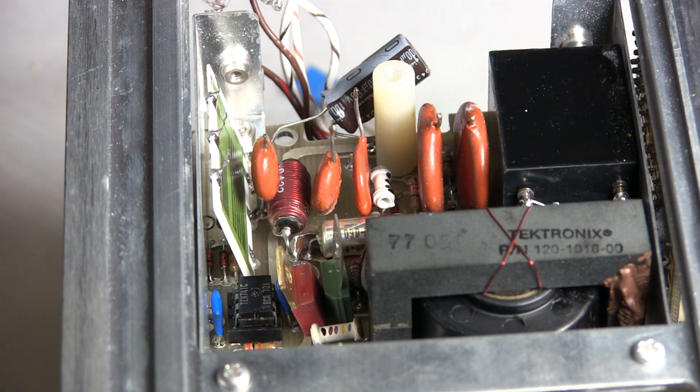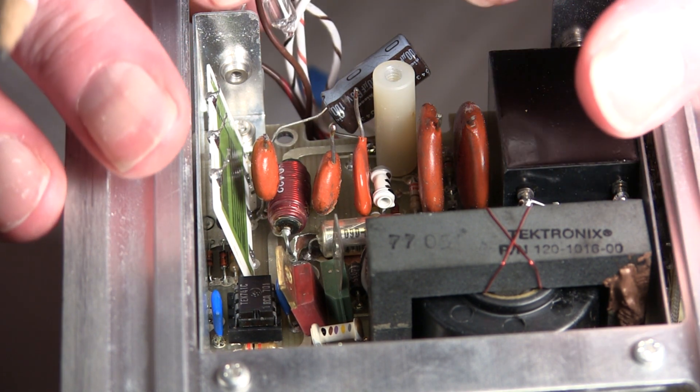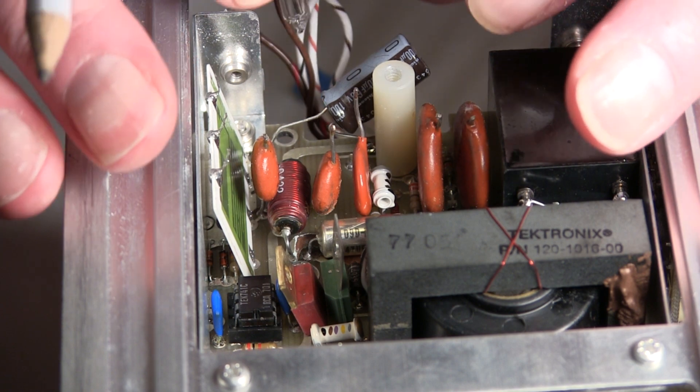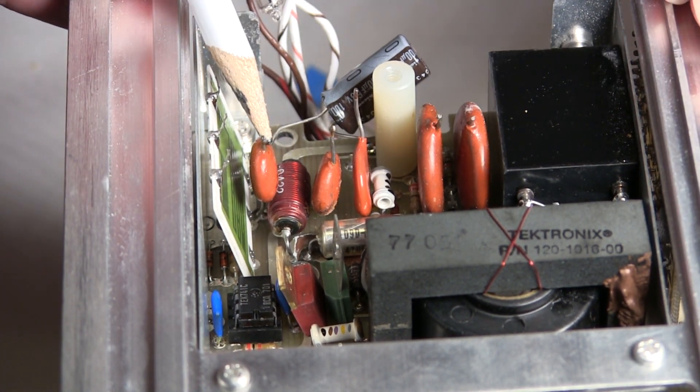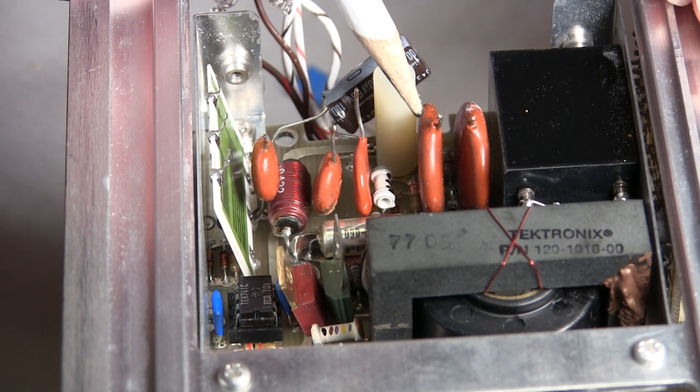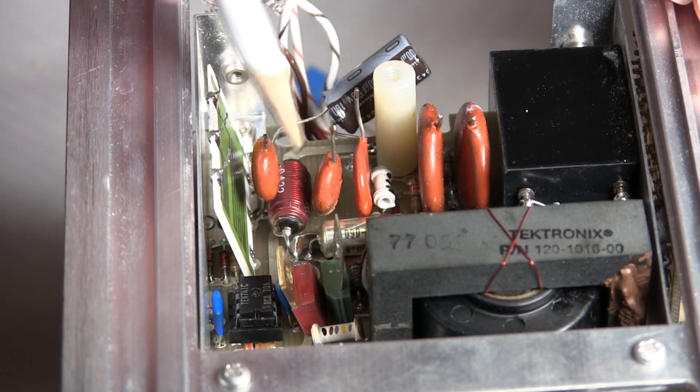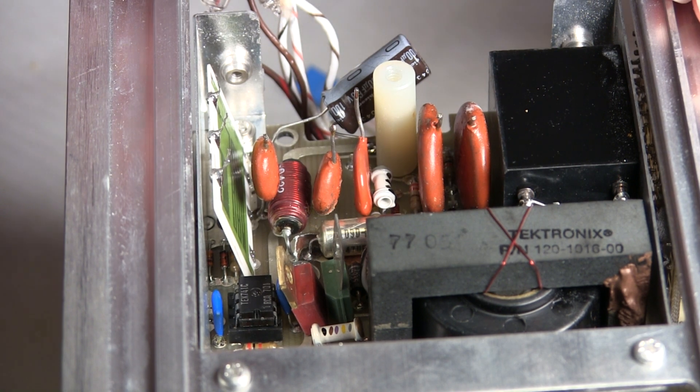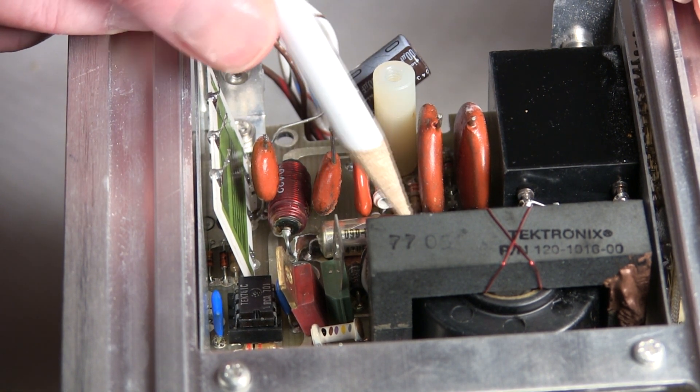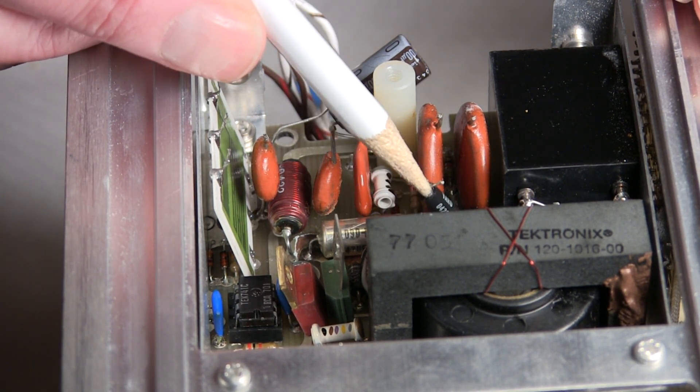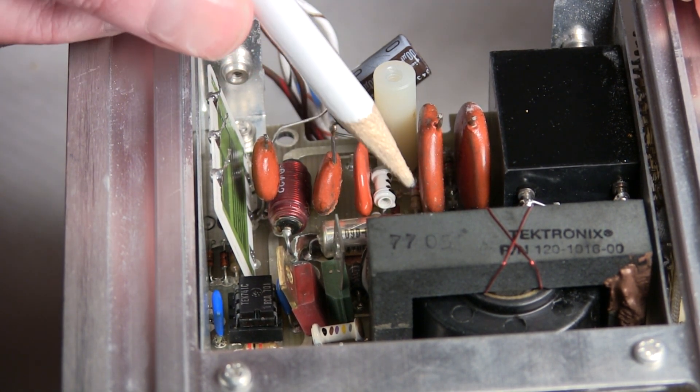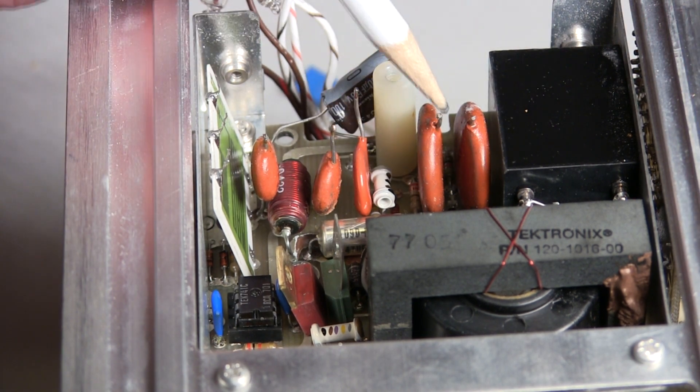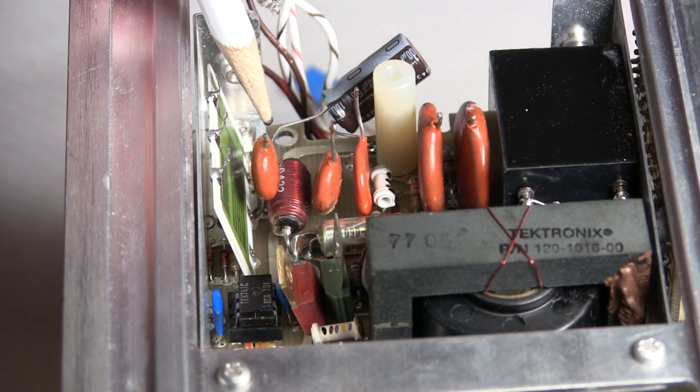The most difficult part of the reassembly is getting this auxiliary board back on because it has to be aligned with the five capacitors that go between the main board and the auxiliary board plus the diode which is behind the transformer in this view. The diode is not that difficult so you can do that later and the problem is getting the first five going.